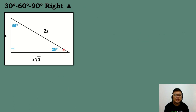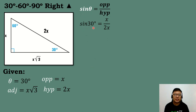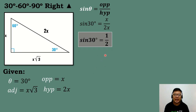Next, let's now evaluate 30 degrees using the given. Theta will be equal to 30 degrees. The adjacent side of the given angle is x square root of 3, the opposite side is x, and the hypotenuse is equal to 2x. Let's now solve for the value of sine 30 degrees. The opposite of 30 degrees is x, and the hypotenuse is equal to 2x. The lowest term of x over 2x is just equal to 1 half. So sine 30 degrees is equal to 1 half.